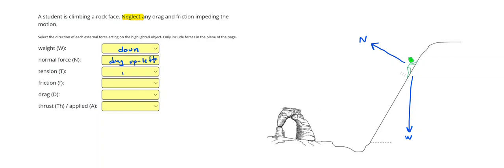All right. There is no tension. It told us to neglect friction and drag. But it does say that the student is actively climbing the rock face, so we're going to have a thrust or applied force. On positive physics, we don't differentiate between the two acting diagonally up to the right.